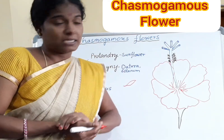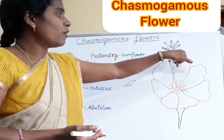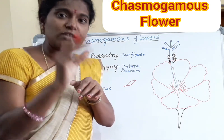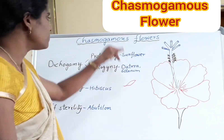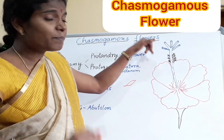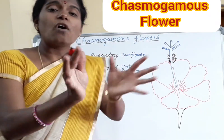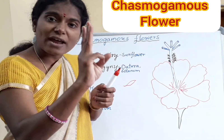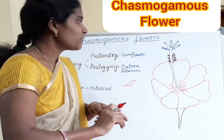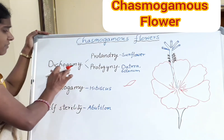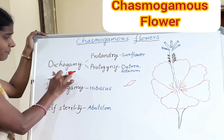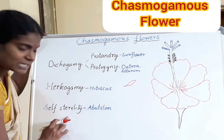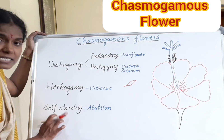In cross-pollination there is a greater chance of getting desired characters, whereas in self-pollination the chance of desired characters is low. So, in chasmogamous flowers, to avoid self-pollination, there are three strategies. They are: Dichogamy, Herkogamy, and Self-Sterility.